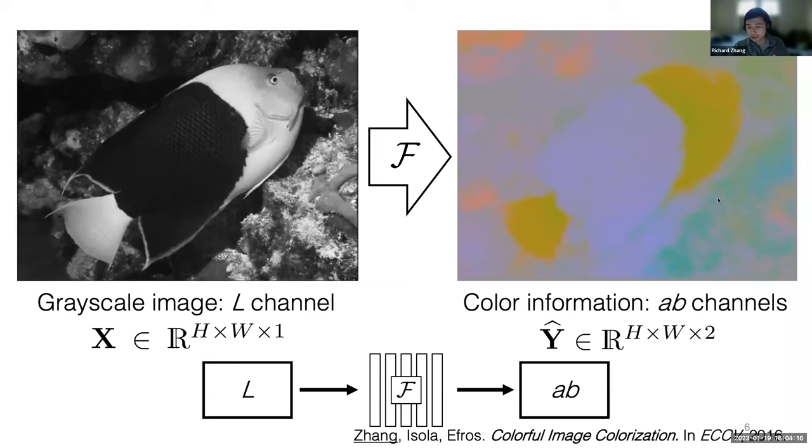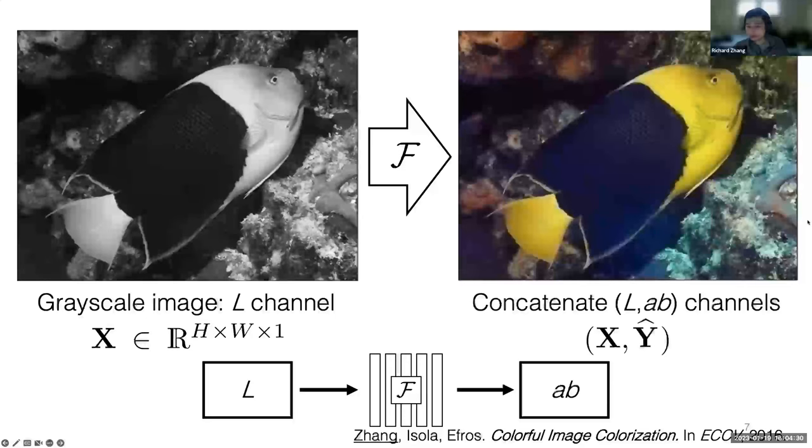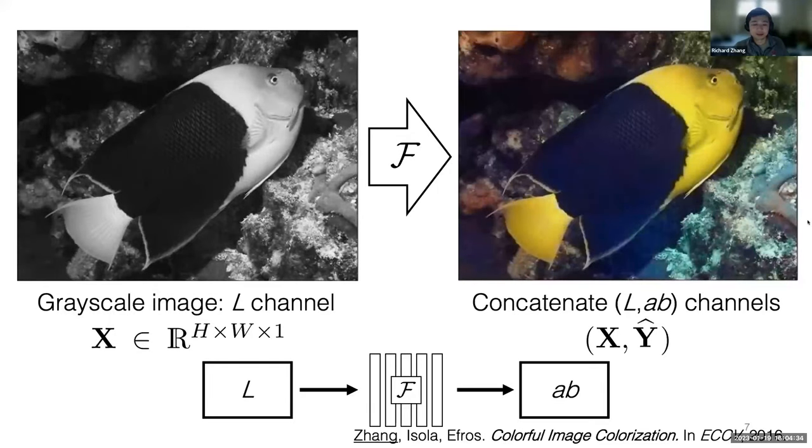Could we predict the color components given the grayscale component of this rockfish? Essentially we're trying to predict a two dimensional signal, the color information or the AB channels from a one dimensional signal, which is the grayscale image. If you can match the input and output, you can get pleasing visual results, hopefully a colorized image of the grayscale input.